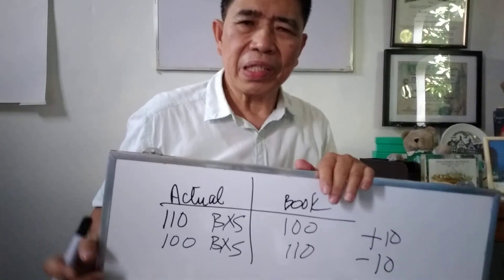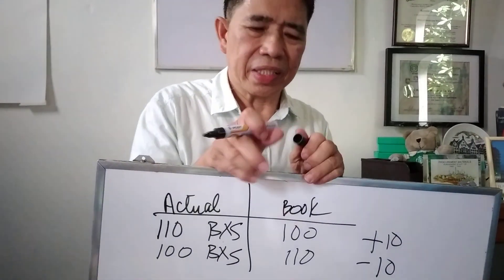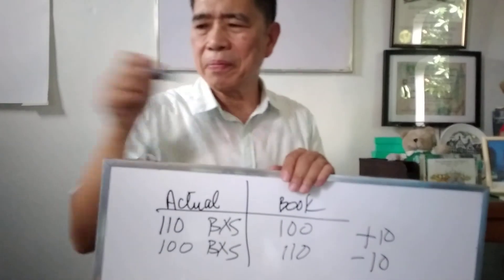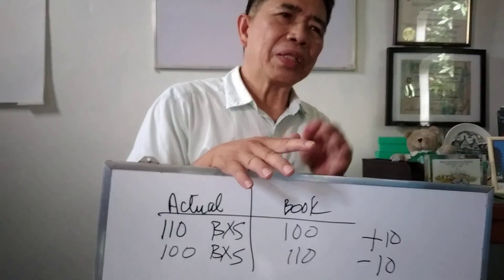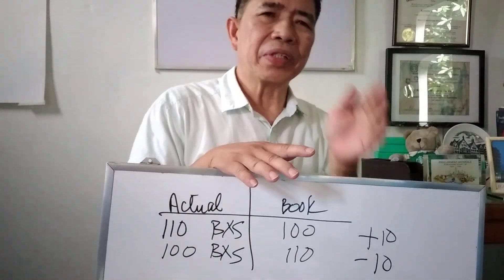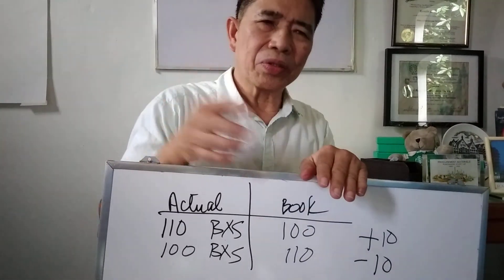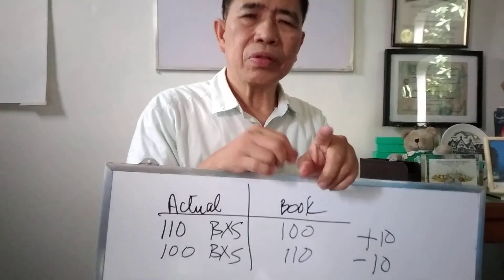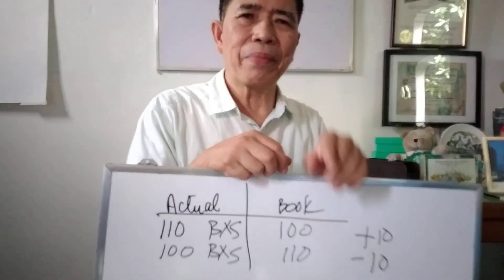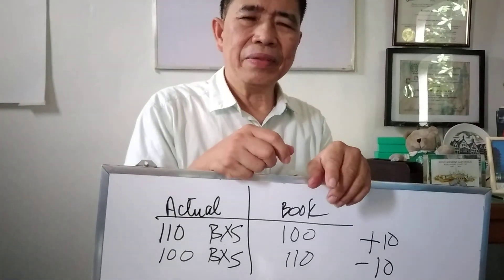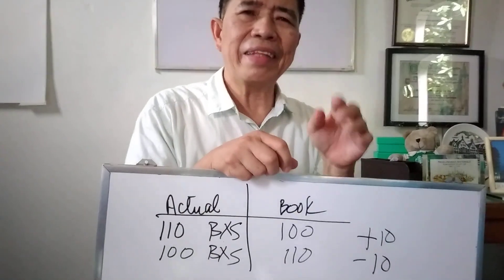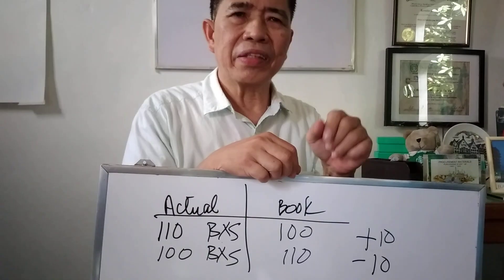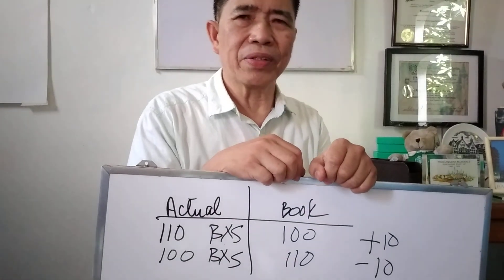Negative or positive are both considered variance and this is an unhealthy indicator in the business. There are three possible root causes of variances: number one, wrong encoding done by the clerk; second, delayed entry for transactions that should be done in real time; and third, possible losses of the inventories.